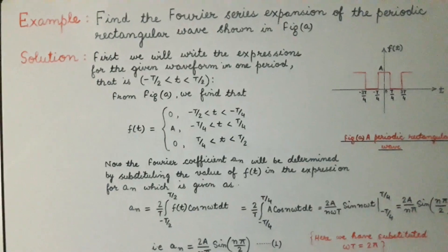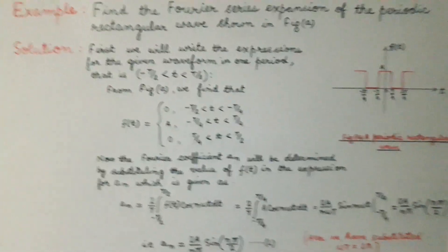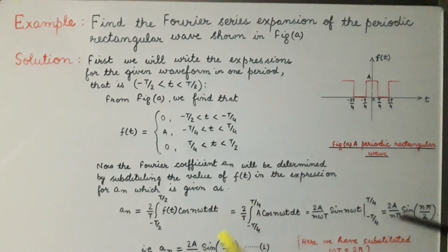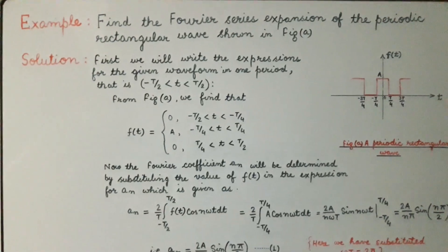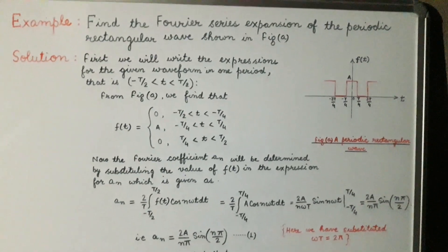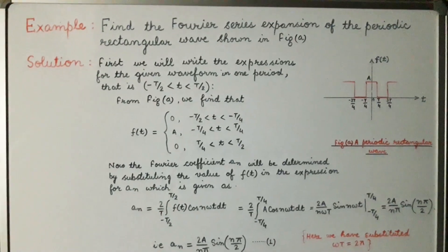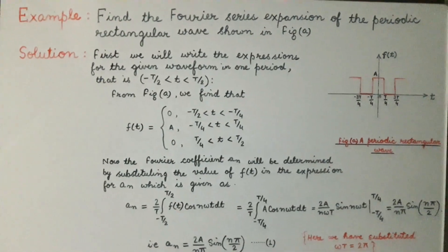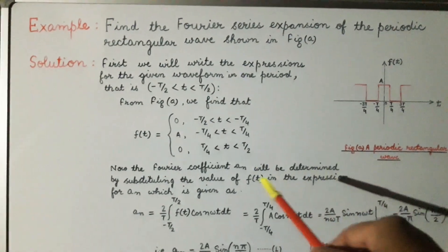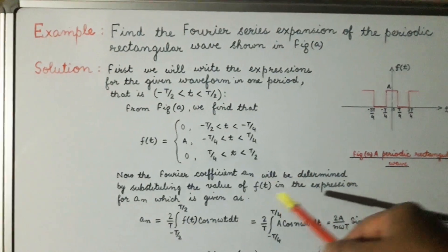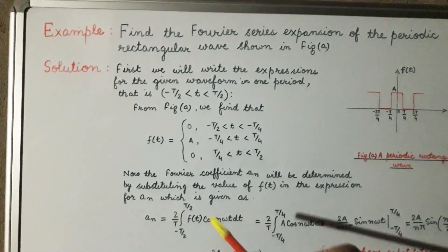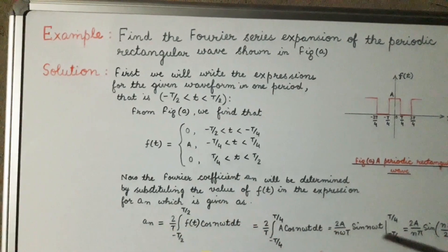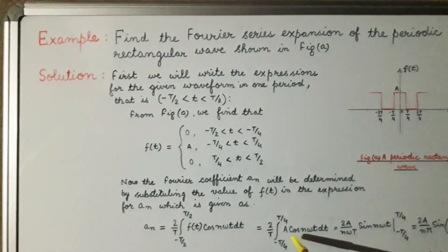Once we have written the expression for f(t) over one period, the next step is to find the Fourier coefficients a₀/2, aₙ, and bₙ. First we find the Fourier coefficient aₙ by substituting f(t) in the expression for aₙ, which is given by (2/T) times the integral from −T/2 to +T/2 of f(t)·cos(nωt)·dt.